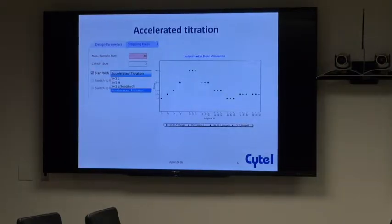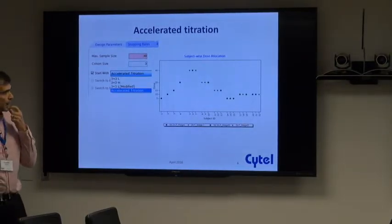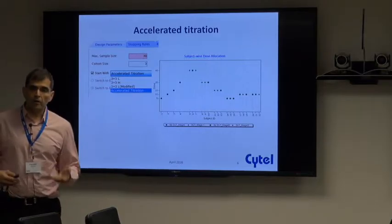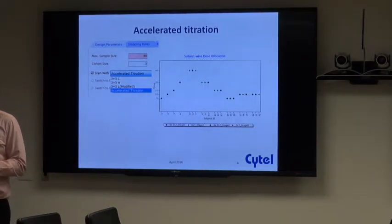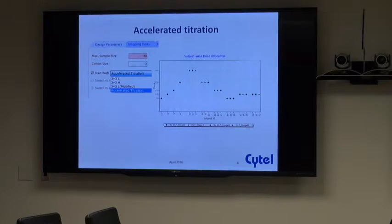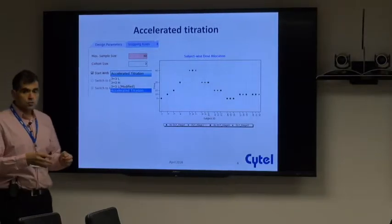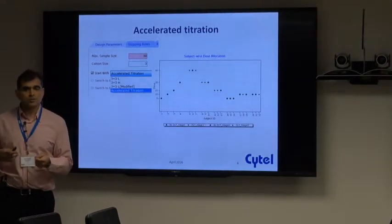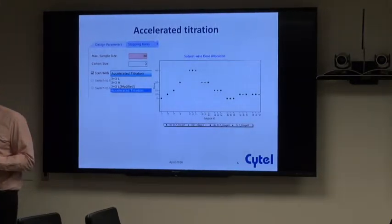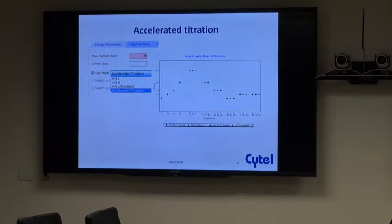We have also included accelerated titration as an option to start any of your dose escalation designs. So instead of using cohorts of subjects, you can use single-subject dose escalation and then switch to the design of your choice once you have reached a DLT — a dose-limiting toxicity.